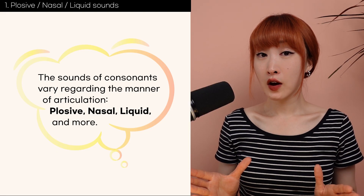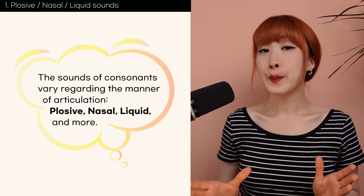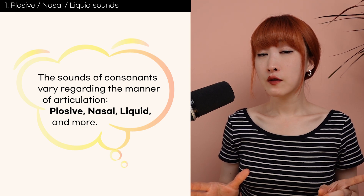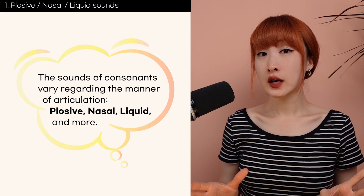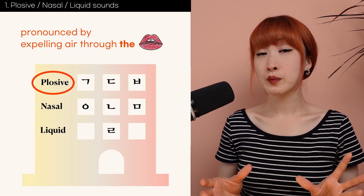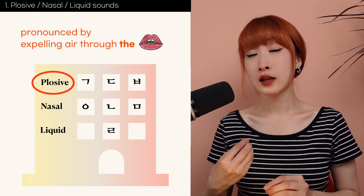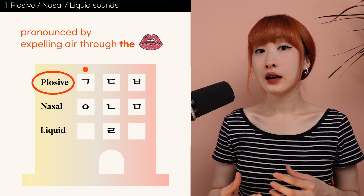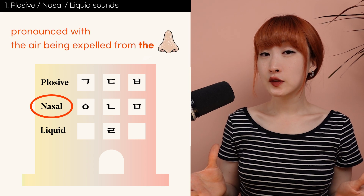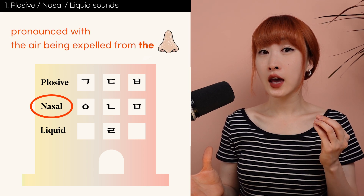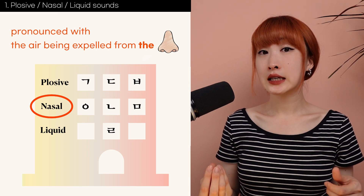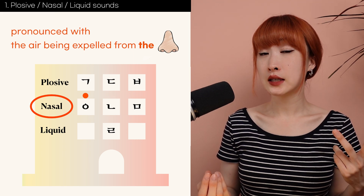The sounds of consonants vary regarding the manner of articulation: plosive, nasal, liquid, and more. Plosive sounds are pronounced by expelling air through the mouth, like ㄱ and ㄷ. Nasal sounds are pronounced with air being expelled from the nose, like ㄴ and ㅁ.